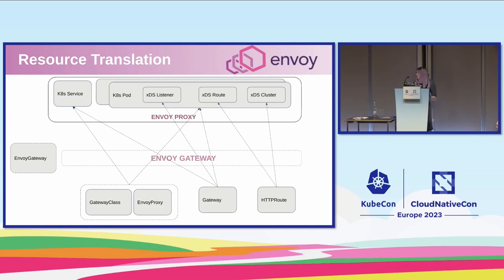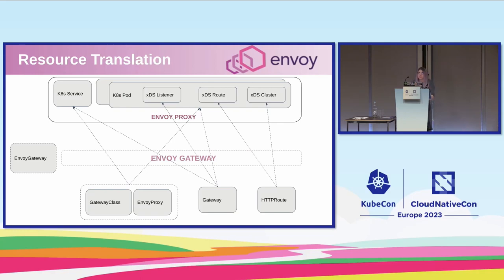The Gateway class resource gives you support for different protocols and how we're going to be listening for requests. Those roughly translate to XDS listener resources. Then you've got your HTTP route, GRPC route, and other routing resources — those control where we're going to send the traffic. You've got support for how we match the traffic, any kind of mutations you want Envoy to do, and then where we're sending that traffic. Those translate to XDS routes, and when you reference a back-end service in those routes, those create XDS clusters.